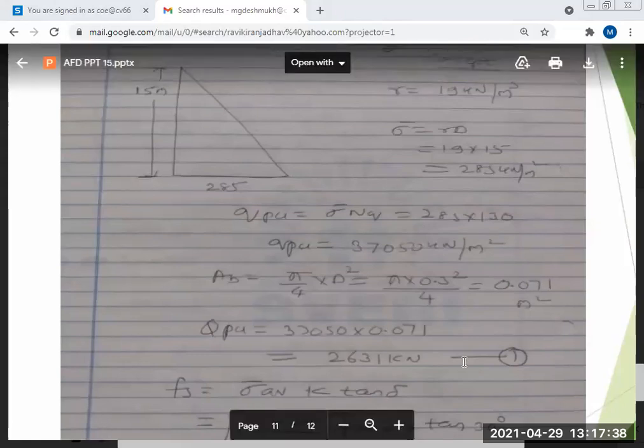So Qp is equal to this value into this one. That is gamma d Nq into AB. Gamma d into Nq came here, AB came here. Multiply all, you will get the first equation. Please if you have any doubts for calculating end bearing resistance you can ask. Any doubt? If you have any doubts you can ask.